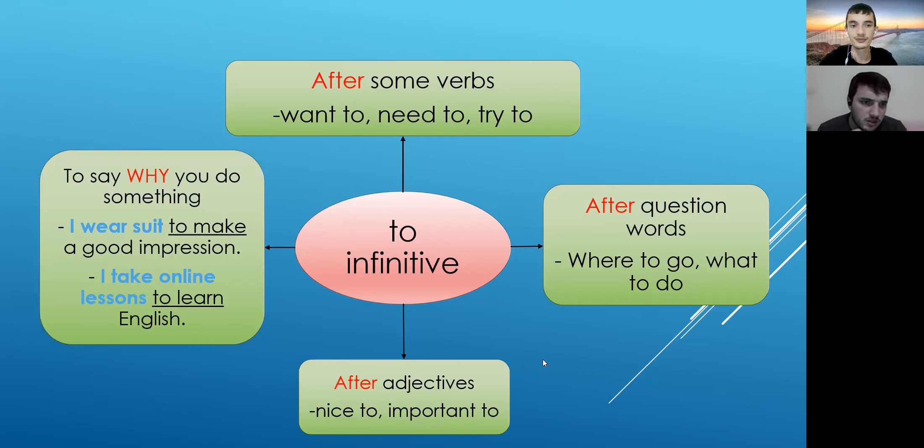And next one, what's it? To say why you do something. I will switch to make. Okay, so to say why you do something. For example, I wear a suit to make a good impression, right? Your main verb is wear, but you say to make a good impression. Or I take online lessons to learn English, right? To learn English. So that's the way to use it, to say why you do something.